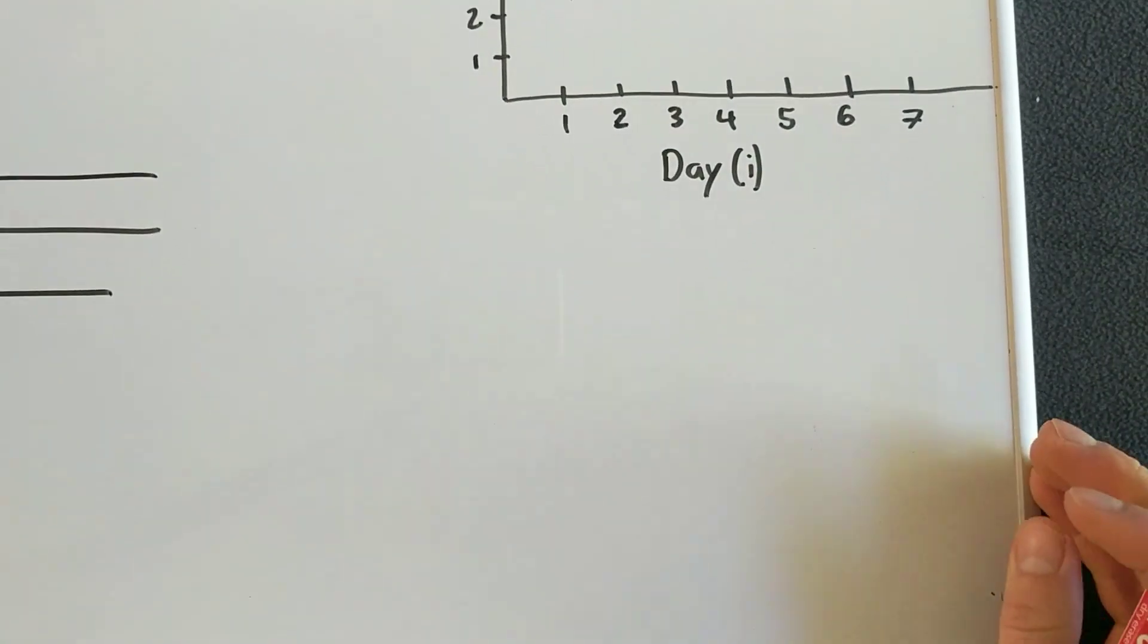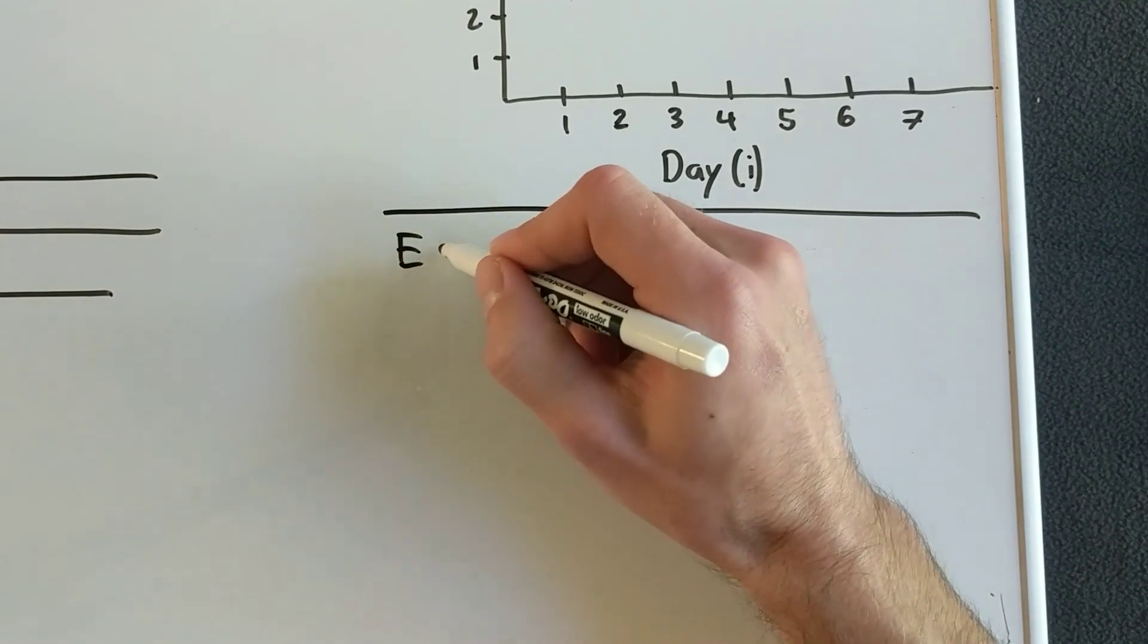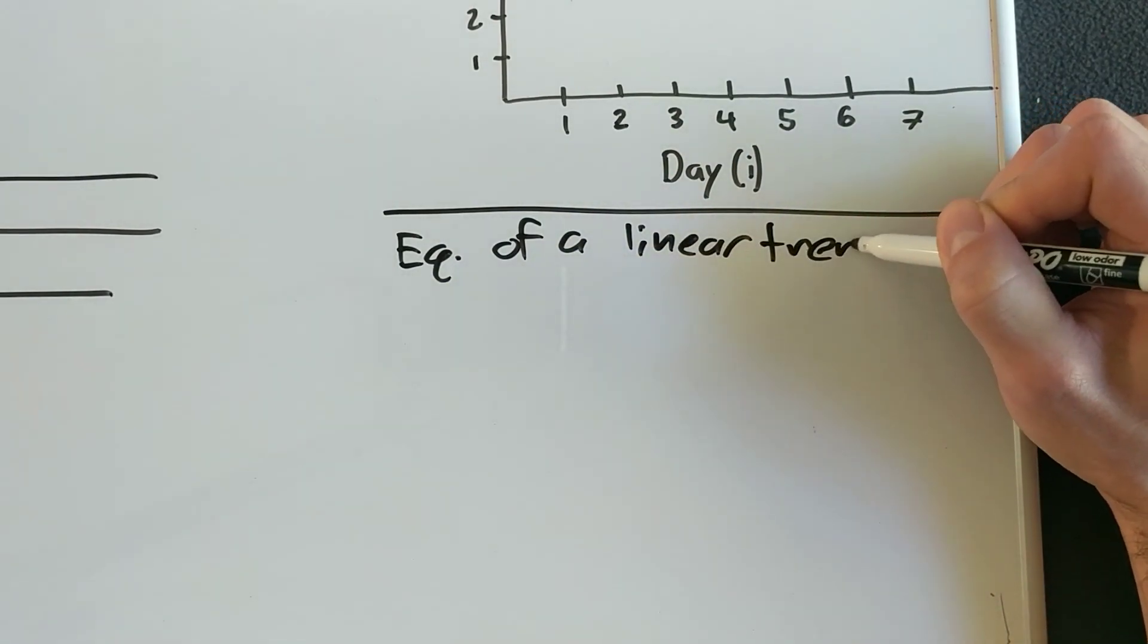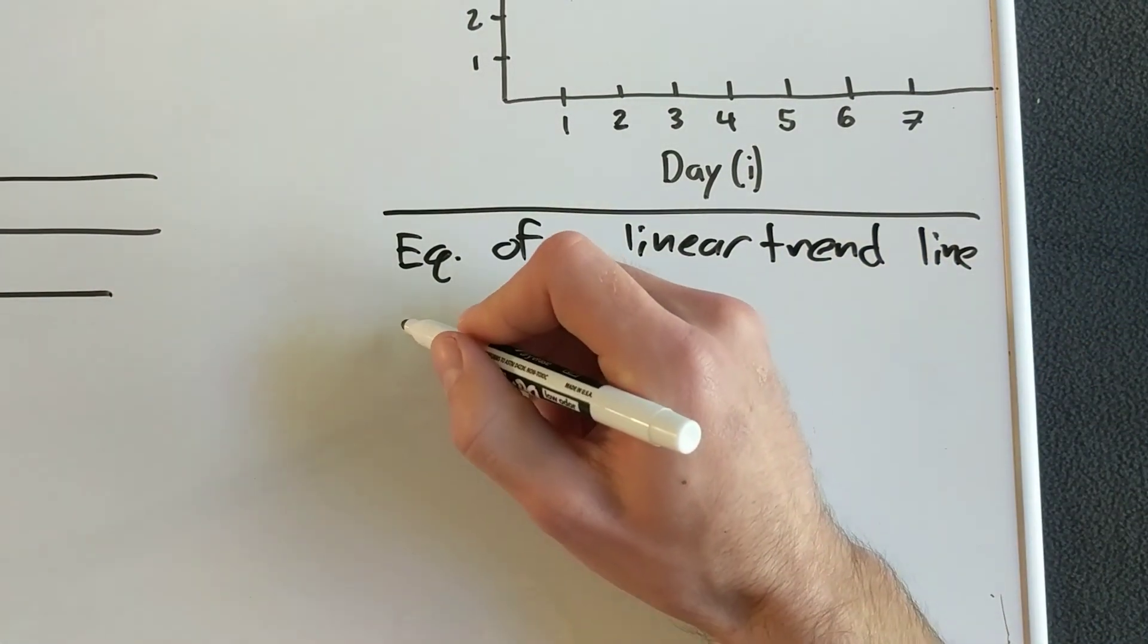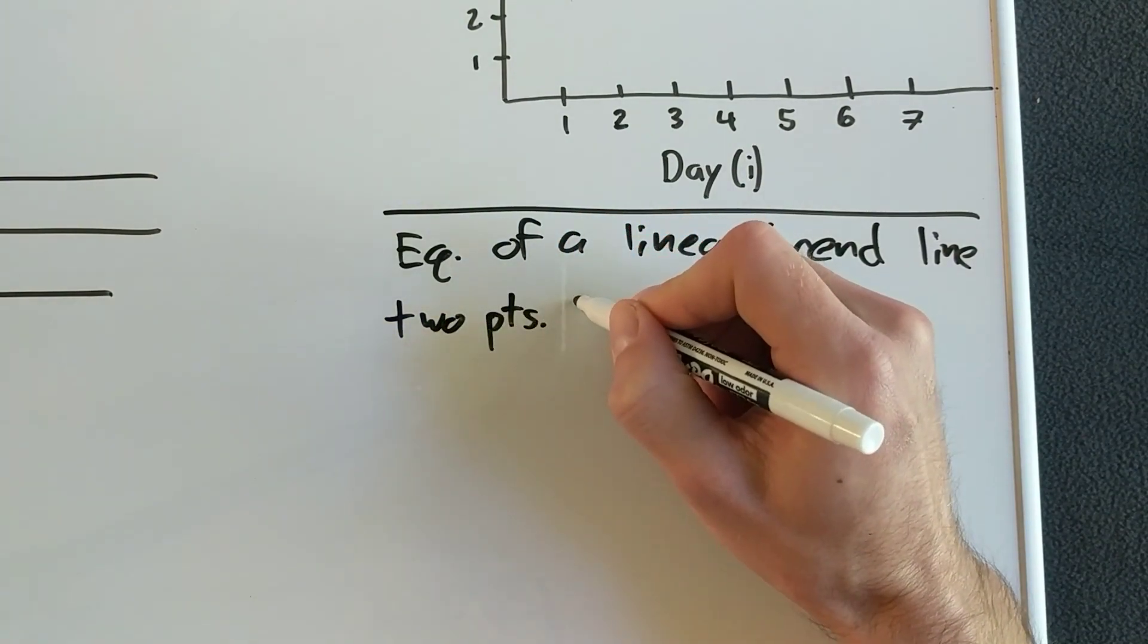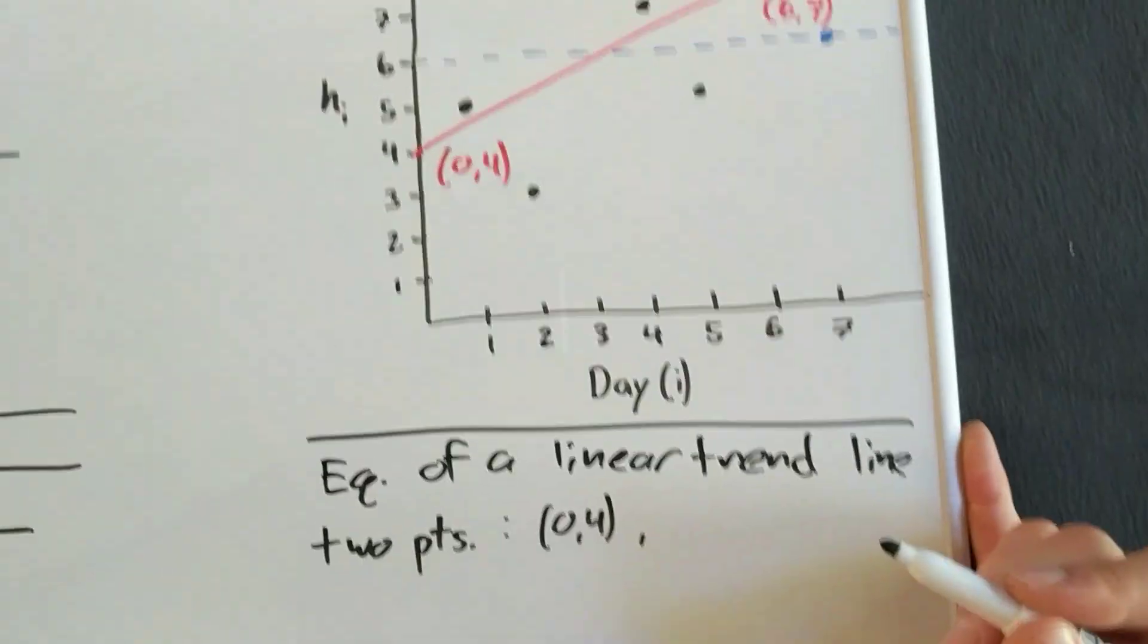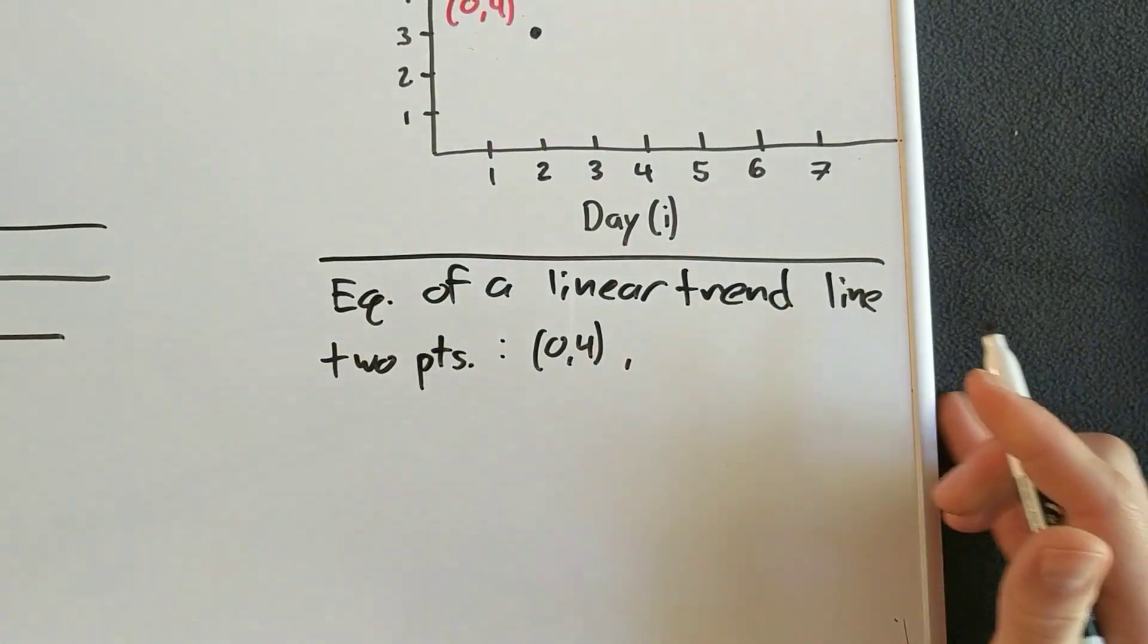And now, I'm going to switch back to black here. So this is finding the equation of a linear trend line. So we start with two points. So our two points are zero and four. And then the other one was six and seven.